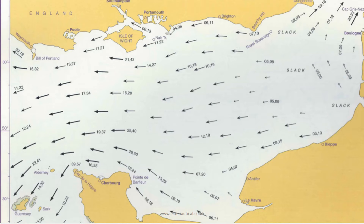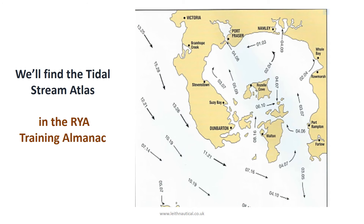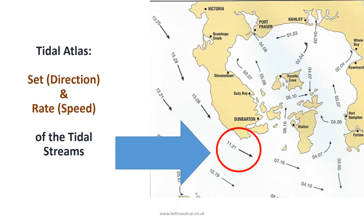The tidal atlas will show us the set and the rate of the tidal streams for each tidal hour. We'll find the tidal stream atlas in the RYA Training Almanac. The tidal atlas gives us a visual overview of the set and rate of the tidal streams in the area in which we are sailing.